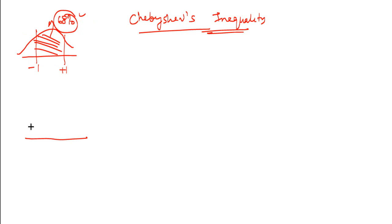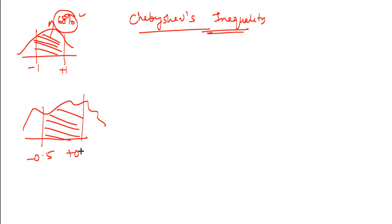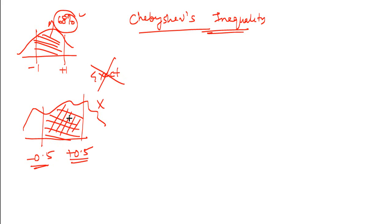However, if you have a distribution whose equation is not known to me and I want to know what is the area between, let's say, minus 0.5 to plus 0.5 — because the equation of the curve is not known, I will not be able to determine the exact value. Note that nobody can tell you the exact value. This distribution can be any distribution — it can be a non-normal distribution also.